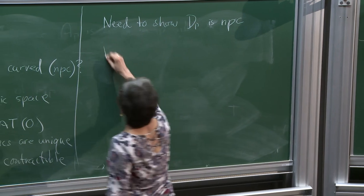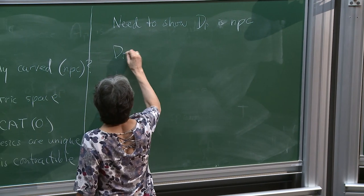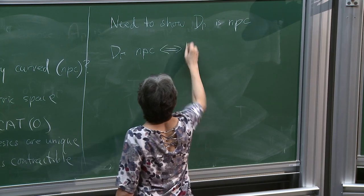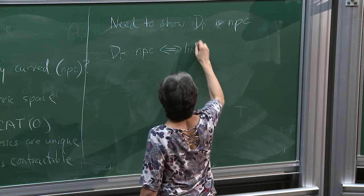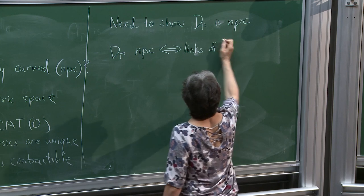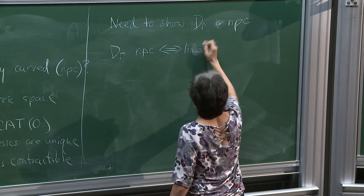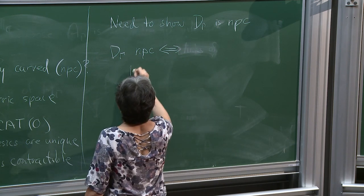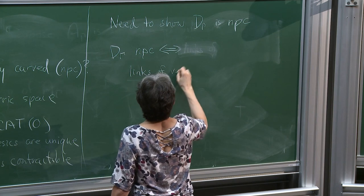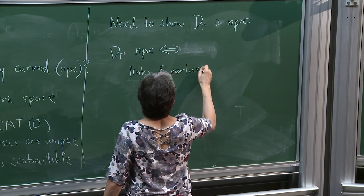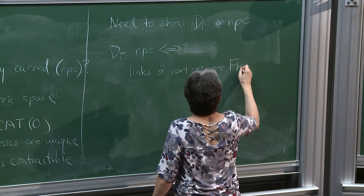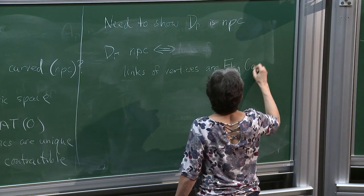D(γ) is non-positively curved if and only if the links of all vertices are flag complexes.